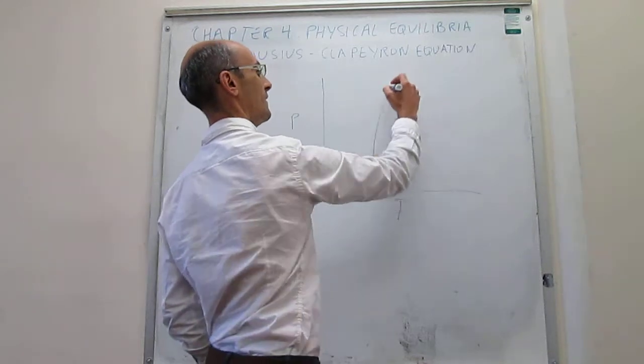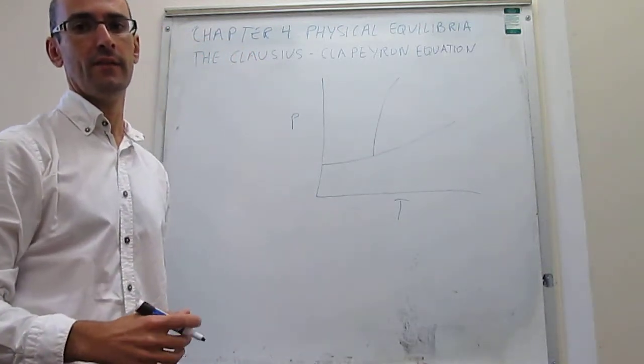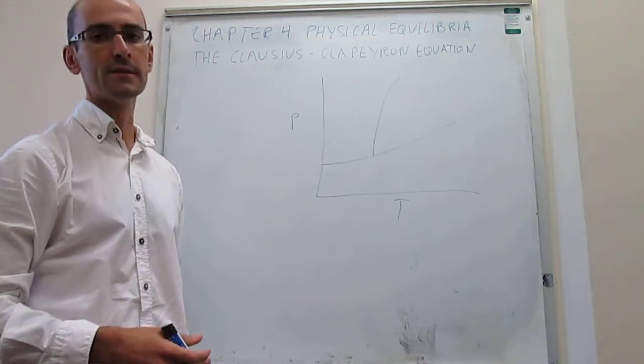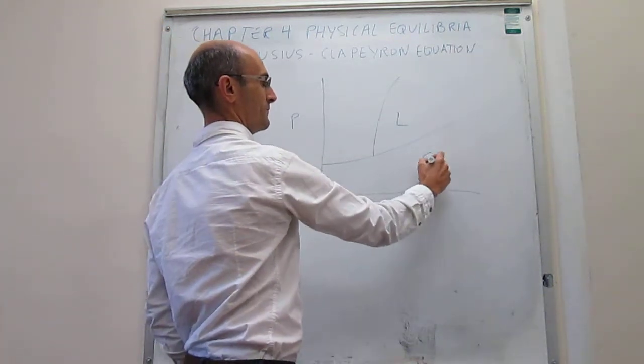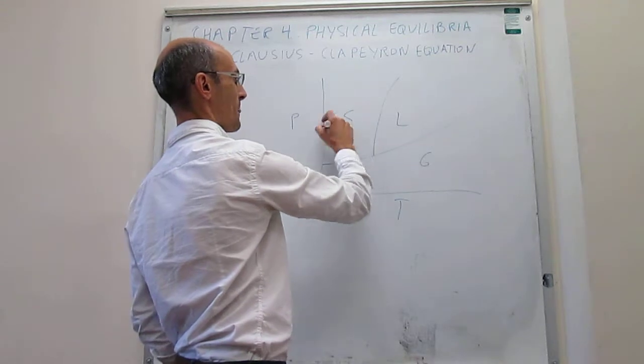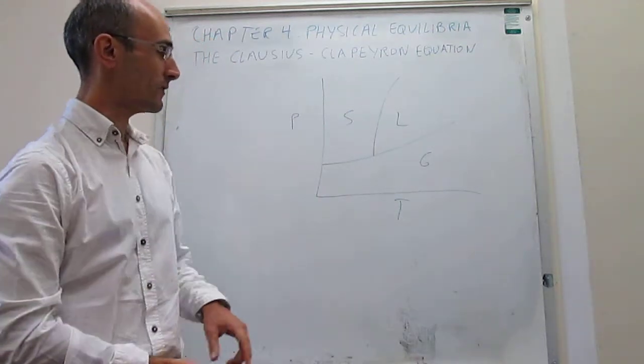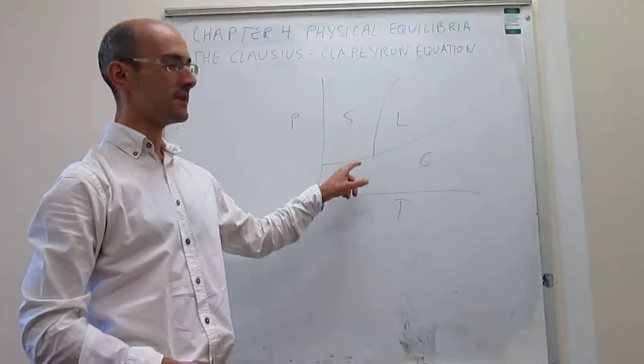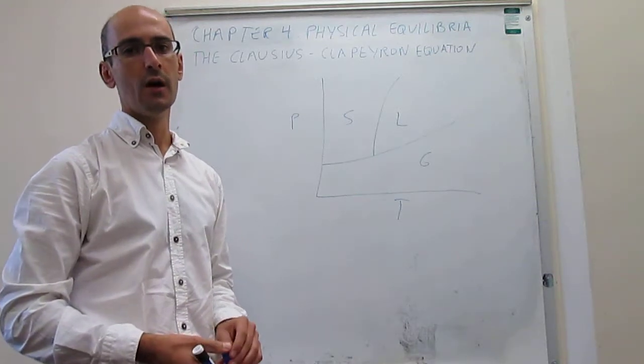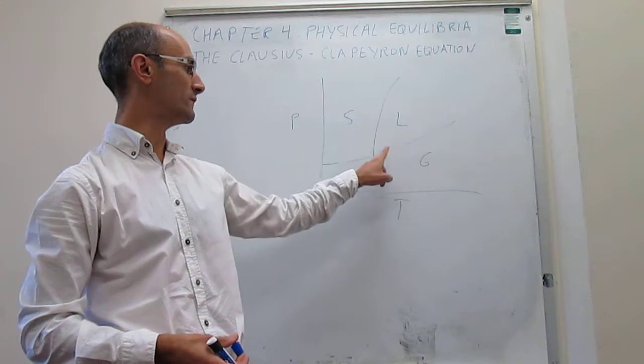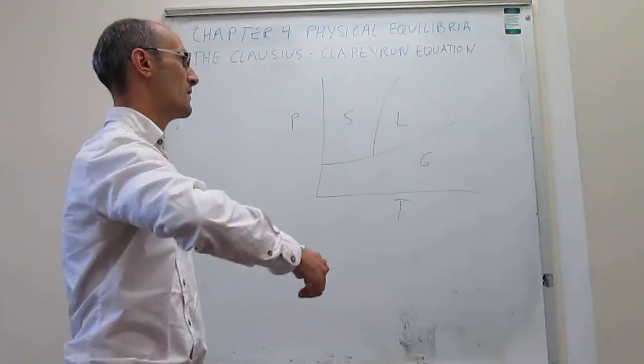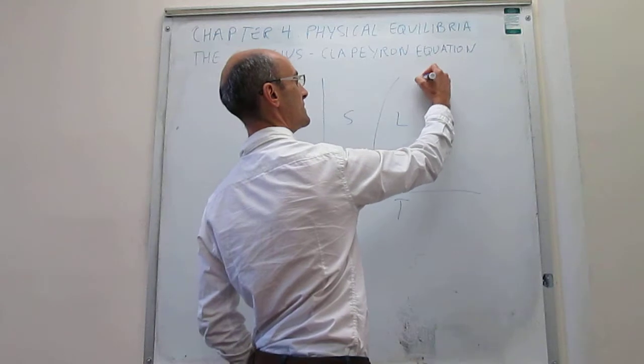You have regions that determine the phase stability of a particular substance as a function of pressure and temperature. We can calculate the slopes in each of these lines using the Clapeyron equation, and with an approximation, we can calculate the slopes using the Clausius-Clapeyron equation.